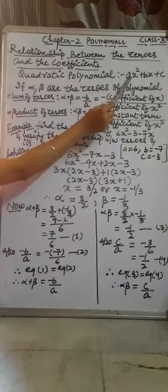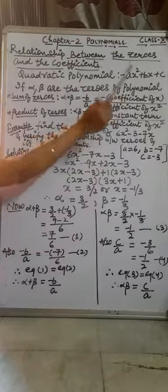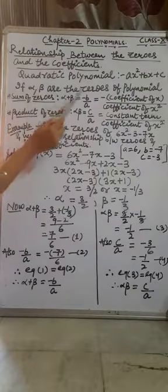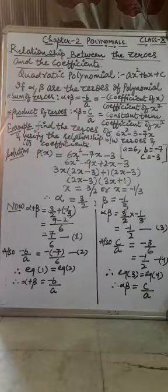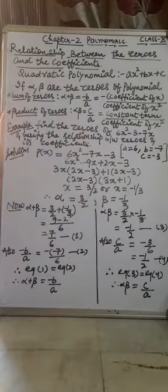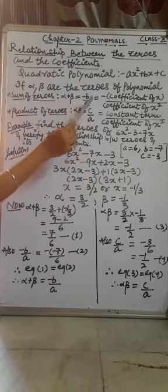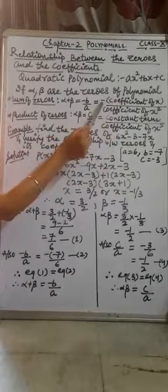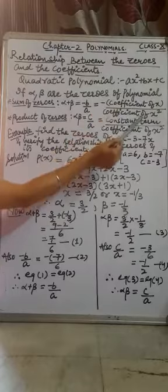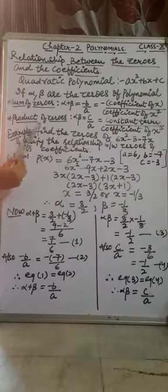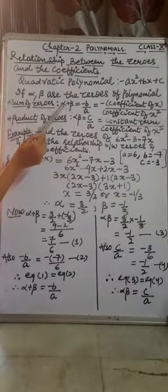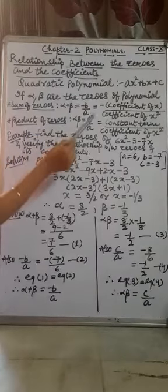The general expression of a quadratic polynomial is ax squared plus bx plus c. Now let alpha and beta be the zeros of this polynomial. We have two relationships: the sum of the zeros, that is alpha plus beta, equals minus b upon a, where b is the coefficient of x and a is the coefficient of x squared. Similarly, the product of the zeros, alpha into beta, equals c upon a.